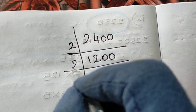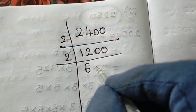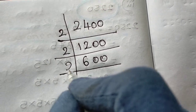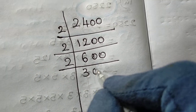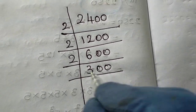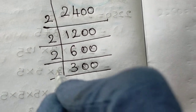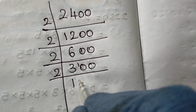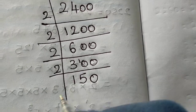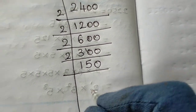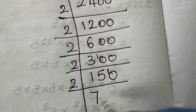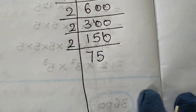Again we take it in the 2 table: 2 sixes are 12, bring the zeros down. Next, 2 threes are 6, bring zeros down. Again in 2: 2 ones are 2, that 1 carries over to make 10, so 2 fives are 10, bring the zero down. Again in 2: 2 sevens are 14, the 1 carries to make 10, then 2 fives are 10.